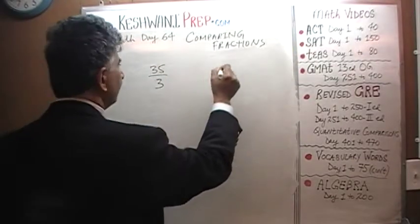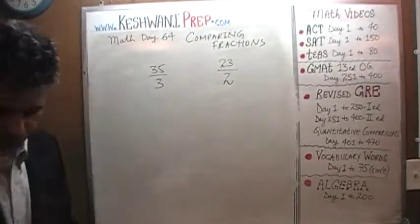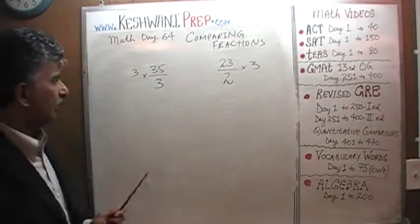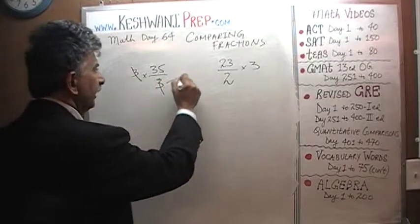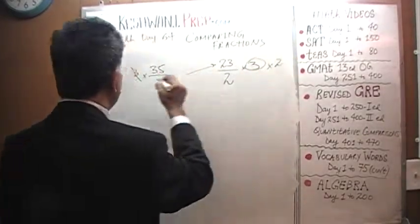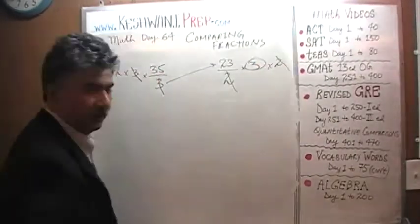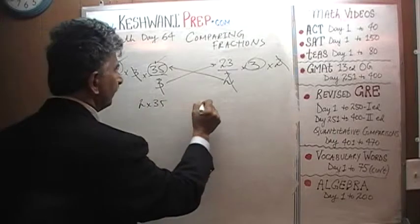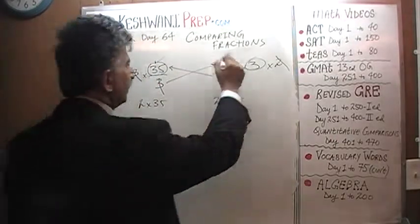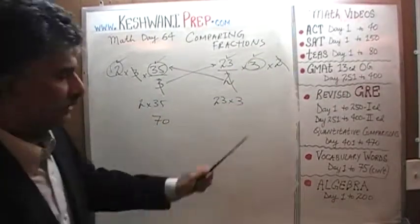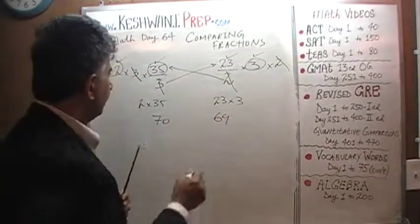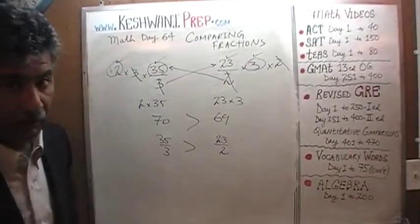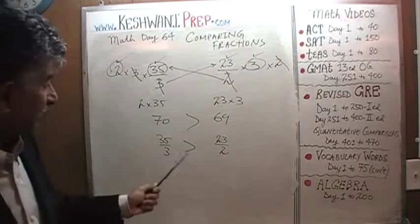Let's try 35/3 versus 23/2. If we multiply both columns by 3, we knock out the 3, and it ends up on the top of the other side. Then we multiply both columns by 2 — the 2 disappears and ends up in the other column. So it's 35 times 2, which is 70, versus 23 times 3, which is 69. That tells us that 35/3 is more than 23/2 — but it's not a lot more; these two fractions are very close to each other, as you can see: 70 and 69.